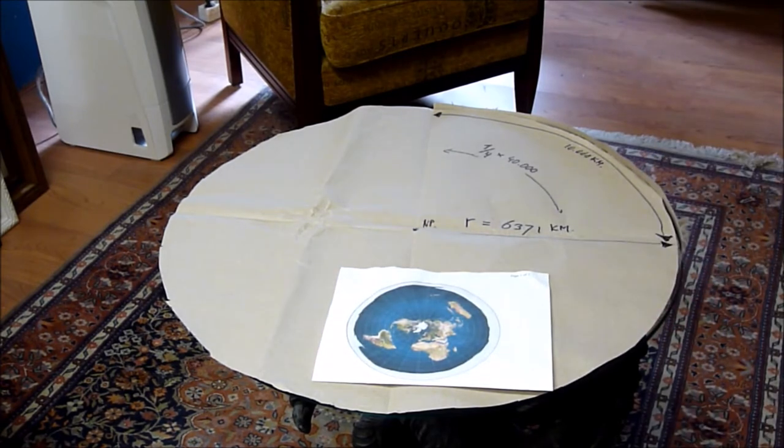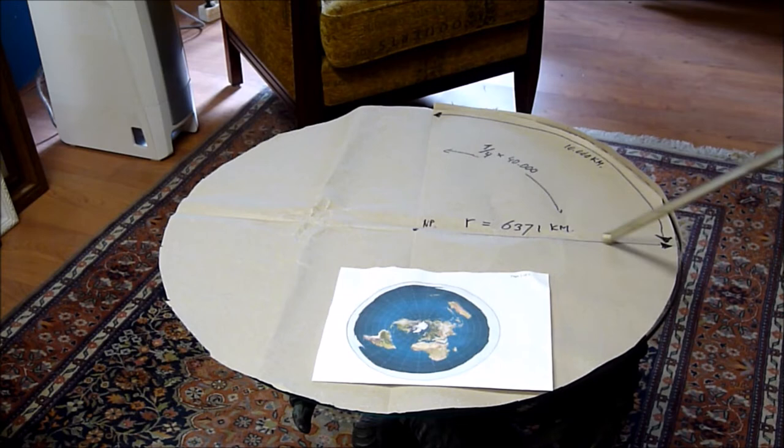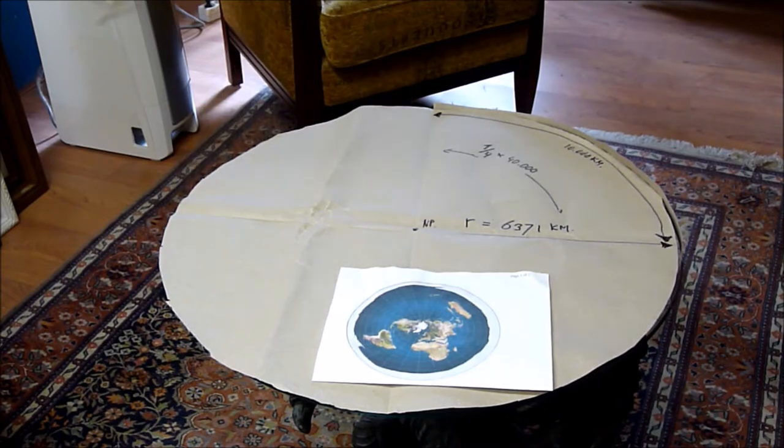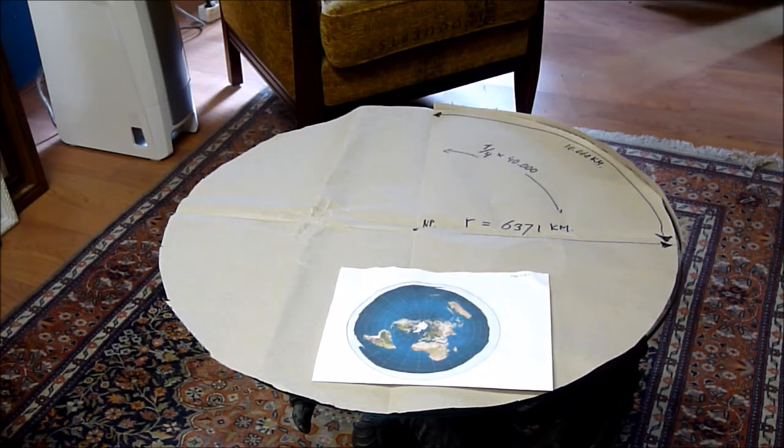Dus, nu komt de truc. Als ik 40.000 kilometer heb, dan kunnen we dus terug rekenen. Dan deel ik door pi en dan deel ik nog een keer door 2, en dan krijg ik de straal: een straal van 6371 kilometer, oftewel 6,3 miljoen meter. En de omtrek is, en we kunnen allemaal tot 4 tellen hoop ik: dit stukje, 10.000 kilometer, nog een keer, nog een keer, nog een keer. We staan in 40.000 kilometer.